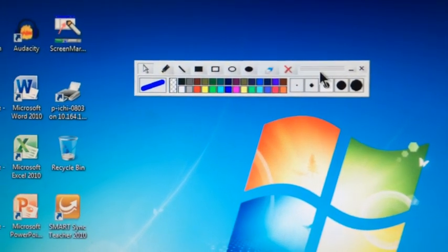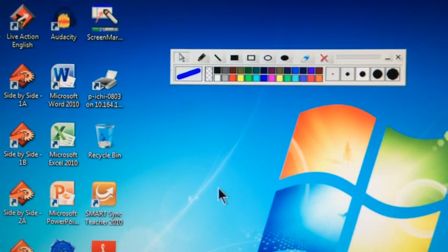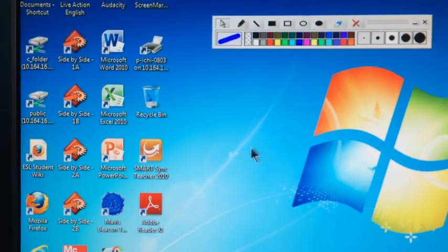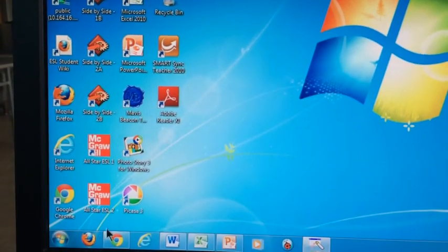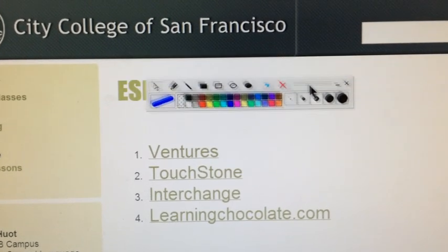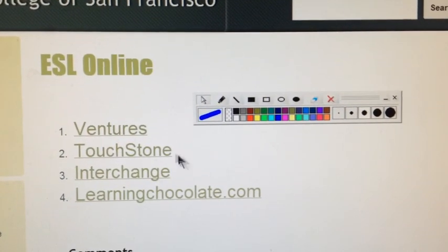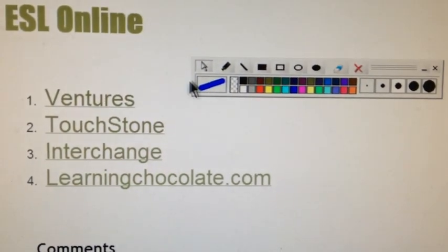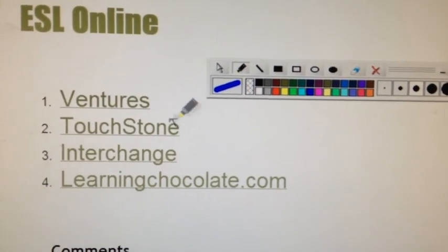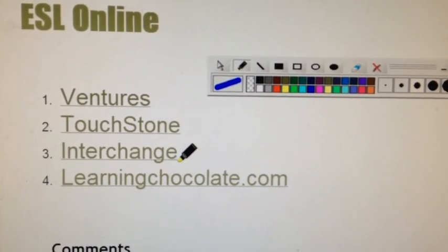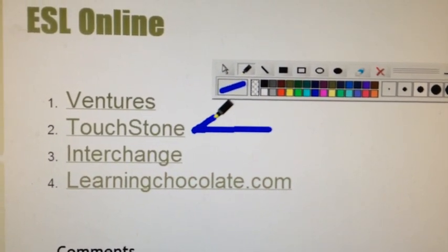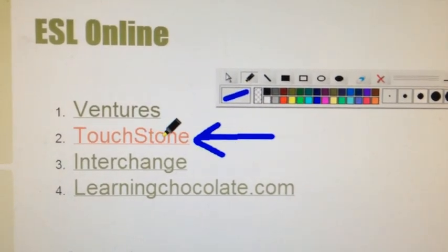Now how do I use this? Let's say I want my level 3 students to use the online ESL lessons. I tell my students, everybody go to this website. I'm going to bring that website up — this is my website. I'm going to move the annotation tool here so you can see. Most of the time I use the marker tool. If I click on the marker, I can write on the screen. We are not using Venture, not using Interchange or Learning Chocolate — my students are using Touchstone. So I might use the annotation tool to draw and point out as I'm demonstrating to them that they need to click on this one.